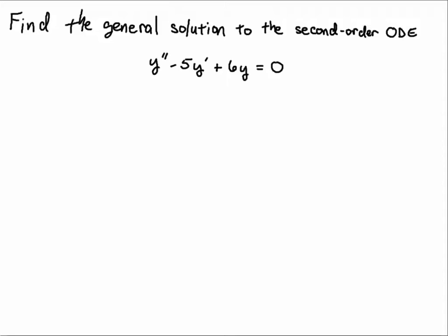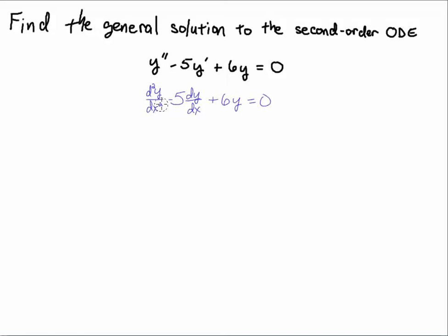Hello students. In this video we're going to justify our method of solution from the previous video, where we constructed a characteristic equation for this ODE. I'm going to rewrite this ODE using operator notation — y double prime I'll write as d²/dx² — minus 5 dy/dx plus 6y equals 0.